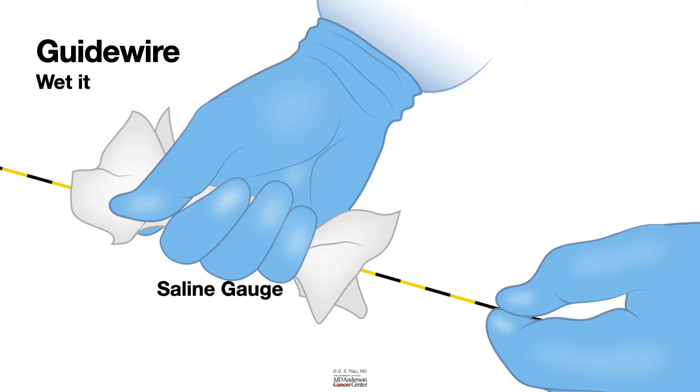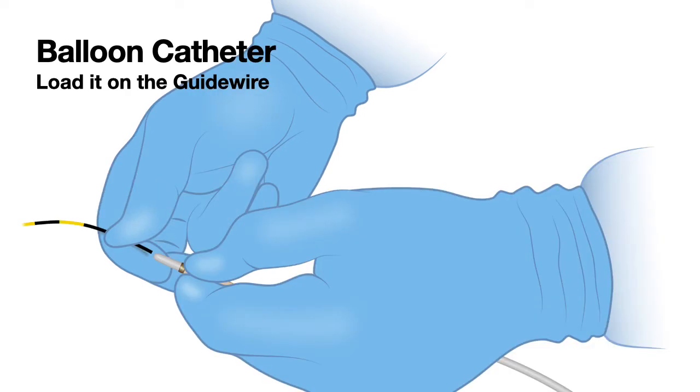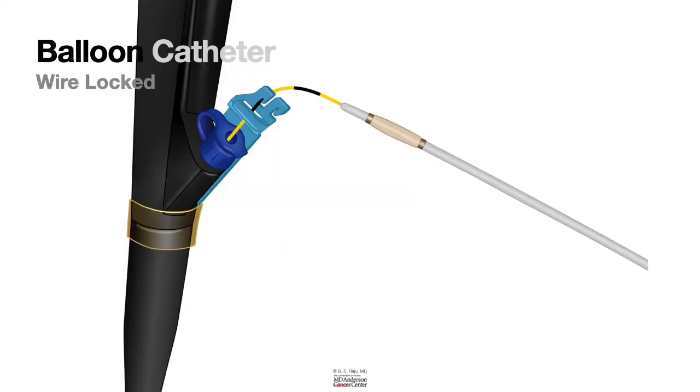Then load the guide wire into the balloon catheter, and once the balloon catheter comes closer to the wire that is locked, unlock the wire and allow the balloon catheter to go in.